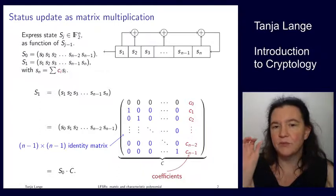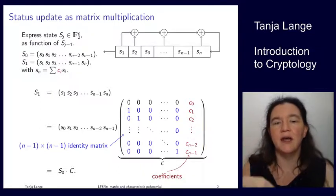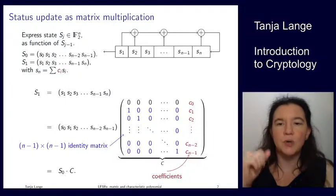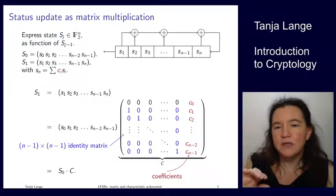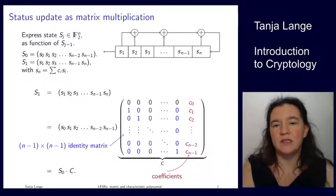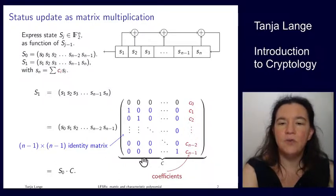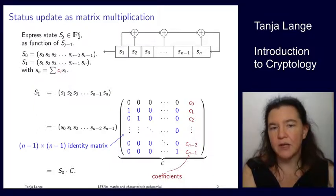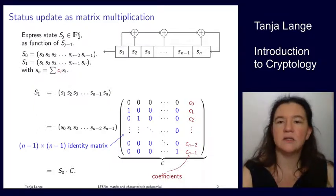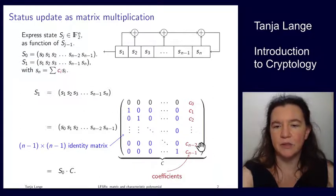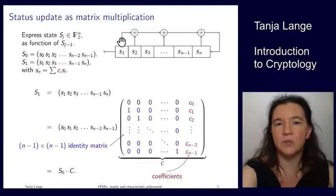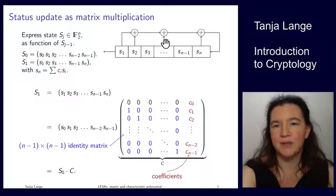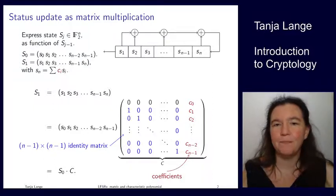The update means you multiply by C, and the way C is built, remember the blue part is an identity matrix, and on the right there is a column vector which has the coefficients from the LFSR: C0 through Cn minus 1. So a wire means 1, then 1, 0, something, 0, 1.